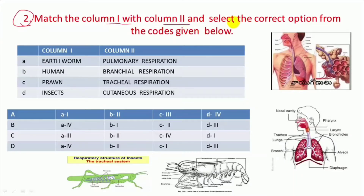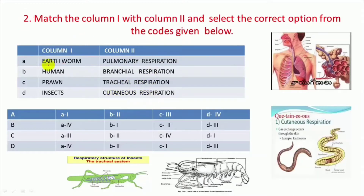This is Question 2: Match the column. Column 1 and Column 2 given hain, aap ko in ko match karna hai — earthworm, pulmonary respiration, branchial respiration, tracheal respiration, cutaneous respiration. Earthworm ke andar hota hai cutaneous respiration. Jaise ki is figure mein aap dekh sakte hain, yeh aap ka earthworm hai aur yeh gas exchange karta hai through the skin.